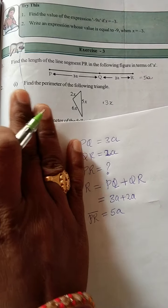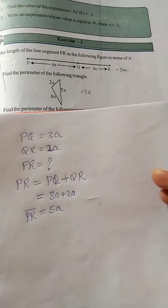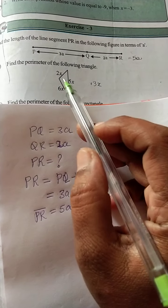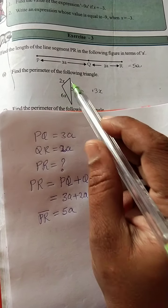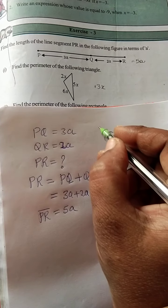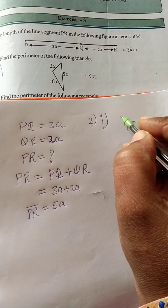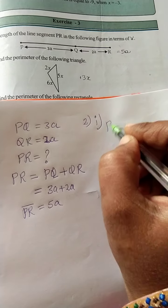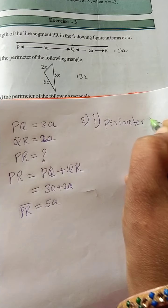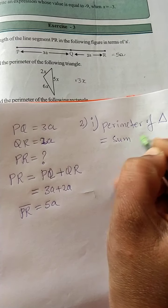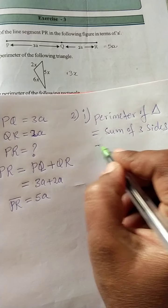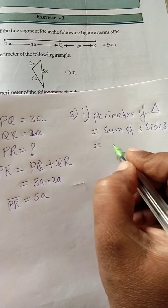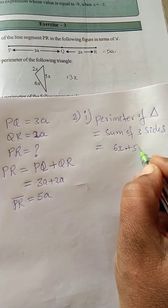Second question, first part: find the perimeter of the following triangle. Perimeter means the length of the boundary of a closed figure. The formula for the perimeter of a triangle is the sum of all three sides. So we should add all three sides: 6x plus 5x plus 2x.